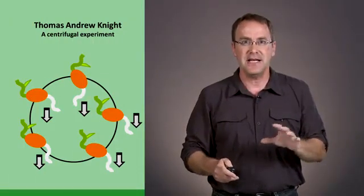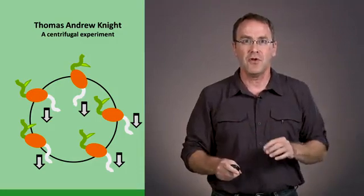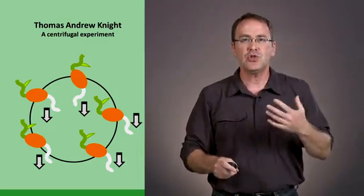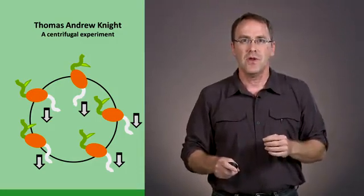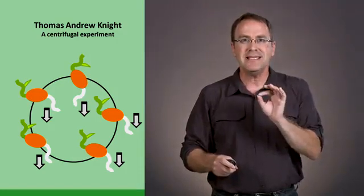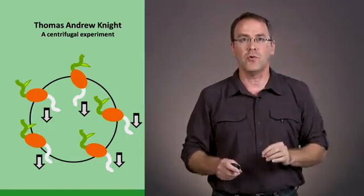So he wanted to check the hypothesis that plants are responding to gravity and the way he did this was as follows. In his estate in England there was a stream flowing through the estate and in the stream he had a water wheel. What he did is he attached plants or seedlings to the water wheel.